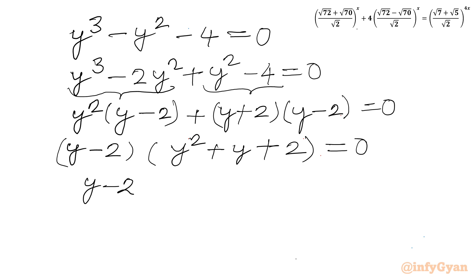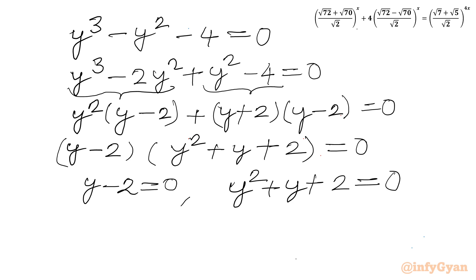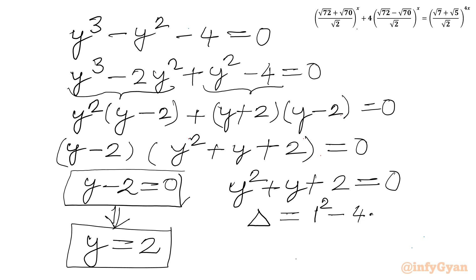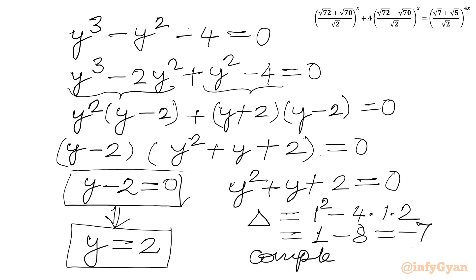So either y − 2 = 0, giving y = 2, or y² + y + 2 = 0. Checking the discriminant of the quadratic: b² − 4ac = 1 − 4(1)(2) = 1 − 8 = −7, which is negative. This generates only complex solutions, so we reject this quadratic. Therefore y = 2 is the only real solution.